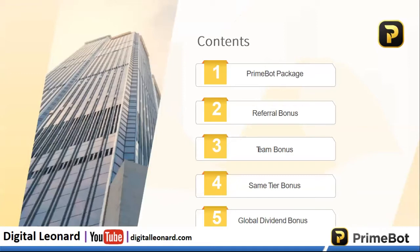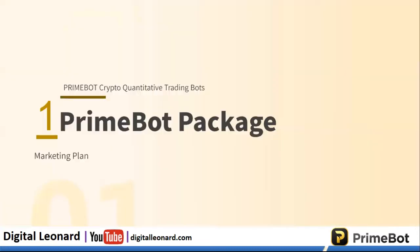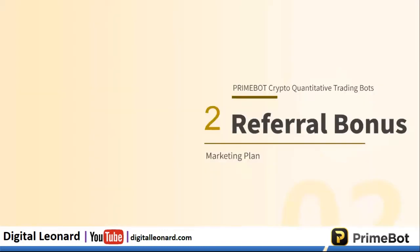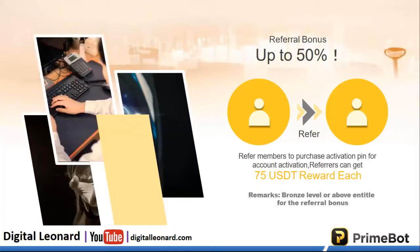There are various ways you can earn from PrimeBot aside from trading. The first is through package activation — for every activation that is made, you get 50% of that. Then we have the referral bonus, which is also 50% of what you get. The PrimeBot package costs $150 to activate for a year. Once you activate, based on the person that referred you, that person is going to get 50% of whatever the activation fee is.